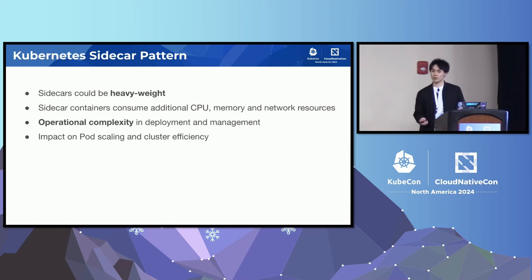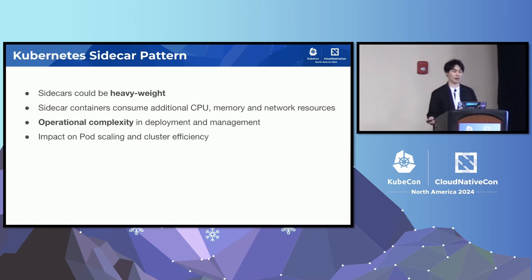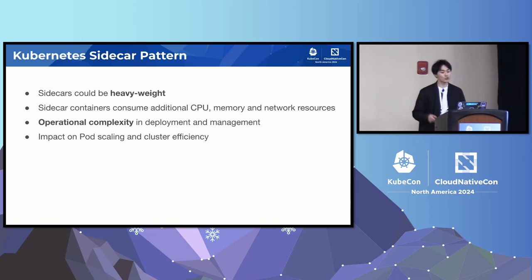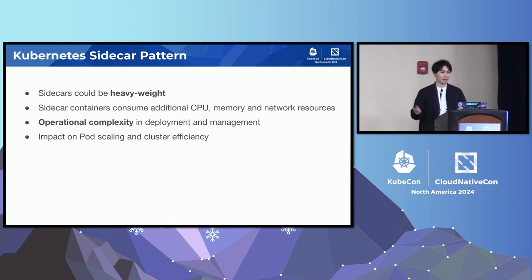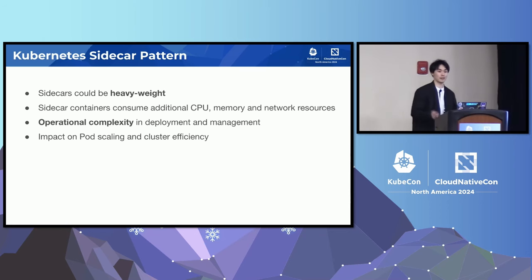There are some downsides to sidecar containers. Sidecars can be heavyweight — the Linkerd sidecar, for example, can consume up to 150 megabytes of disk space because it bundles the entire JVM. Sidecar containers also consume additional CPU, memory, and network resources, competing with your main application. There is operational complexity given that the sidecar and the main application can be managed by different teams with different upgrade cycles. If a sidecar upgrades too frequently, it can interrupt your main application. All three points have a negative impact on pod scaling and cluster efficiency.